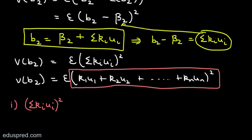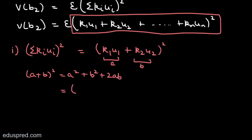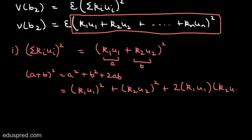Let's first assume i varies from 1 to 2. Then we have (k1*u1 + k2*u2)². Using the formula (a+b)² = a² + b² + 2ab, this gives k1²u1² + k2²u2² + 2(k1*u1)(k2*u2). So we square and add the individual terms and add twice their cross product.